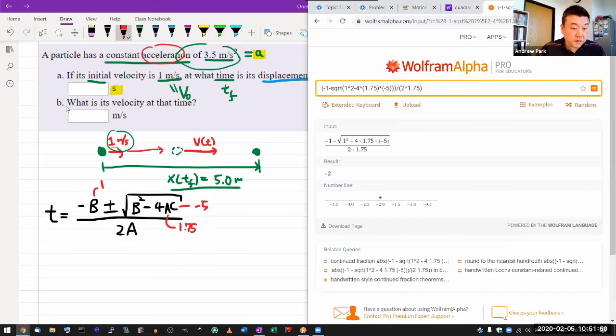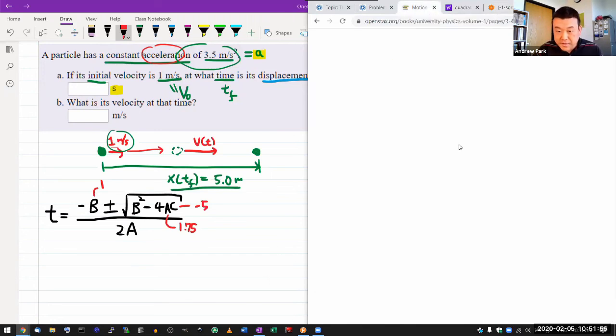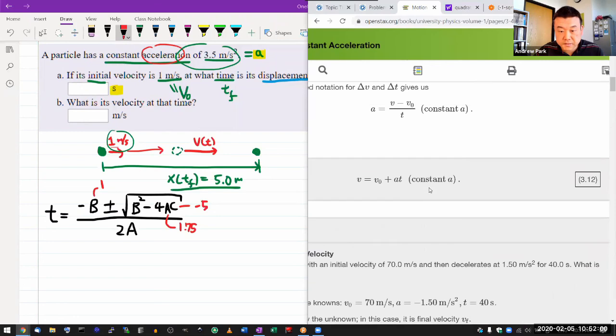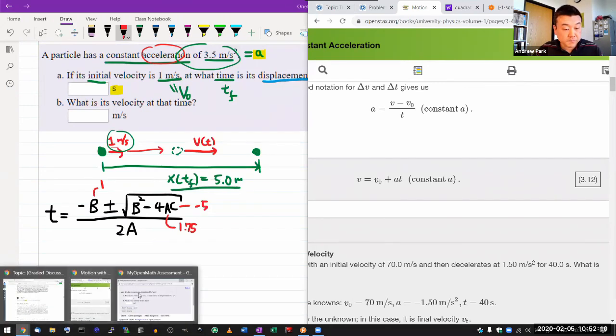Okay. It says, what is its velocity at the time? So once you have the time, then it's kind of easy. Oh, that's where you would use this other equation that I kind of skipped over. You would use this expression here, velocity as a function of time. So you have V naught one, you have acceleration, and you now have the time. So you plug in the time.